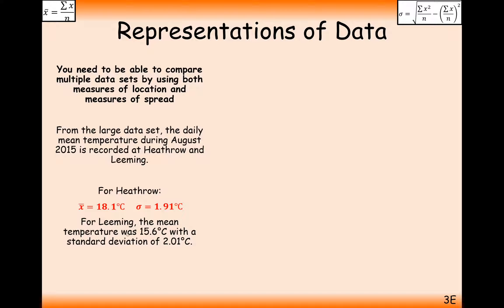For Leeming, the mean temperature was 15.6, with a standard deviation of 2.01. So we can compare the median, sorry, the means between the two sets of data, and the standard deviation between the two sets of data.